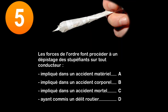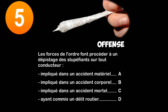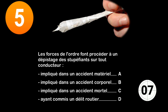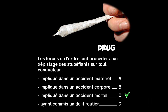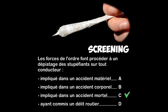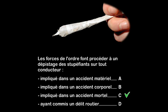Question five: the police have drug screening carried out on any driver — a) involved in a material accident, b) involved in a bodily accident, c) involved in a fatal accident, d) having committed a traffic offense. Drug screening is routinely carried out on any driver involved in a fatal traffic accident. Screening can also be carried out, but not necessarily, on a driver involved in a material or bodily accident, and it can also result from an offense that may lead to suspension of the driver's license.